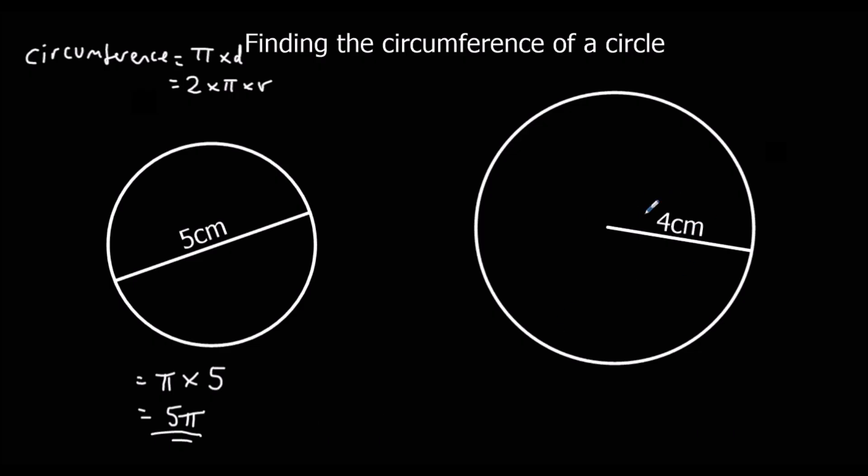In this case, we've been given the radius, so we could find the diameter by doubling it. So the diameter for this one is 8 centimeters. So this is in centimeters as well. So to find the circumference, we do pi times diameter, which is pi times 8. And pi times 8 is 8 pi.